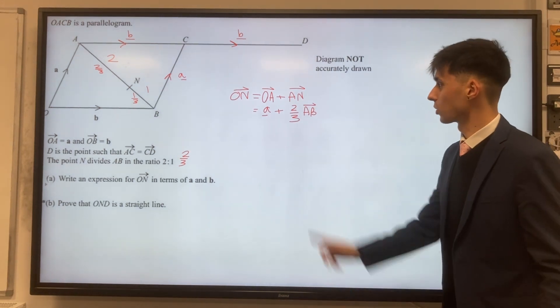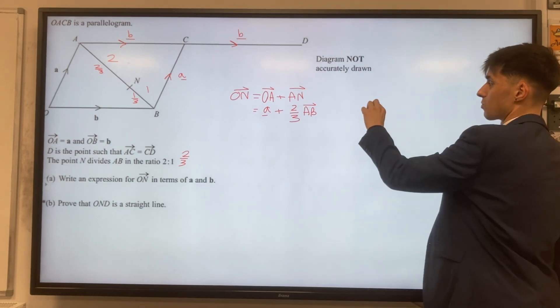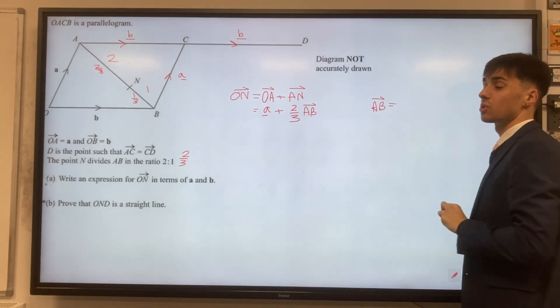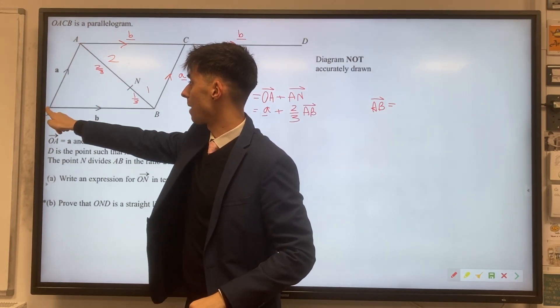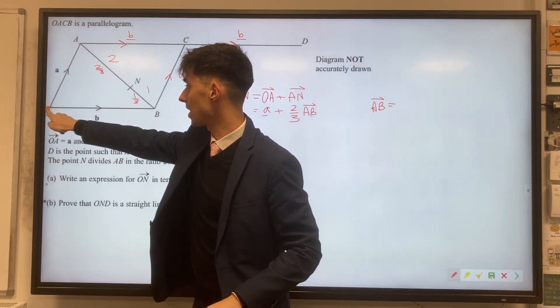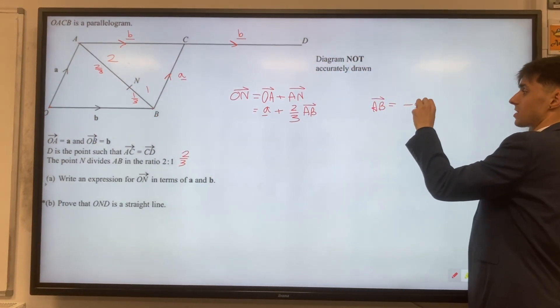So let's pause for a second because we don't actually know the vector A to B yet, but it's reasonably easy to work out. So to go from A to B, you start here at A, we need to go back to O, so it's minus a, and then we're adding a b to get to B. So we've got minus a plus b.